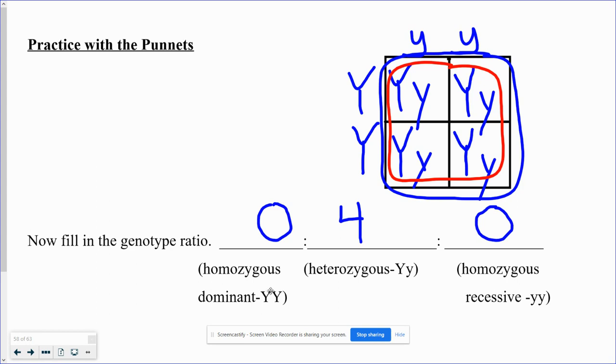We've learned homozygous dominant, which means two dominant alleles—in this case it would be capital Y capital Y. We've learned heterozygous, which is one dominant allele and one recessive allele—in this case capital Y lowercase y. And we've learned homozygous recessive, which is lowercase y lowercase y in this case.